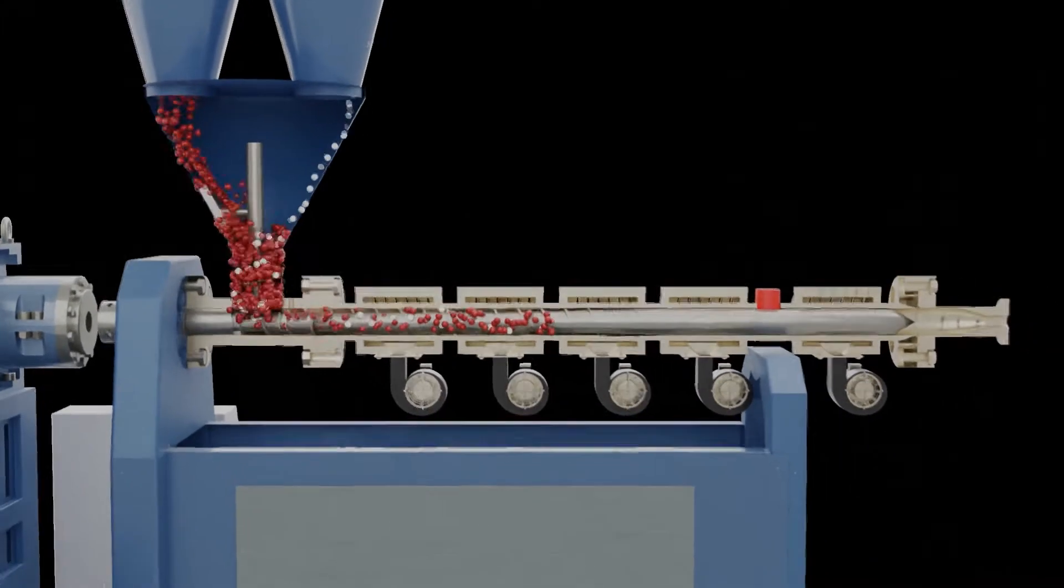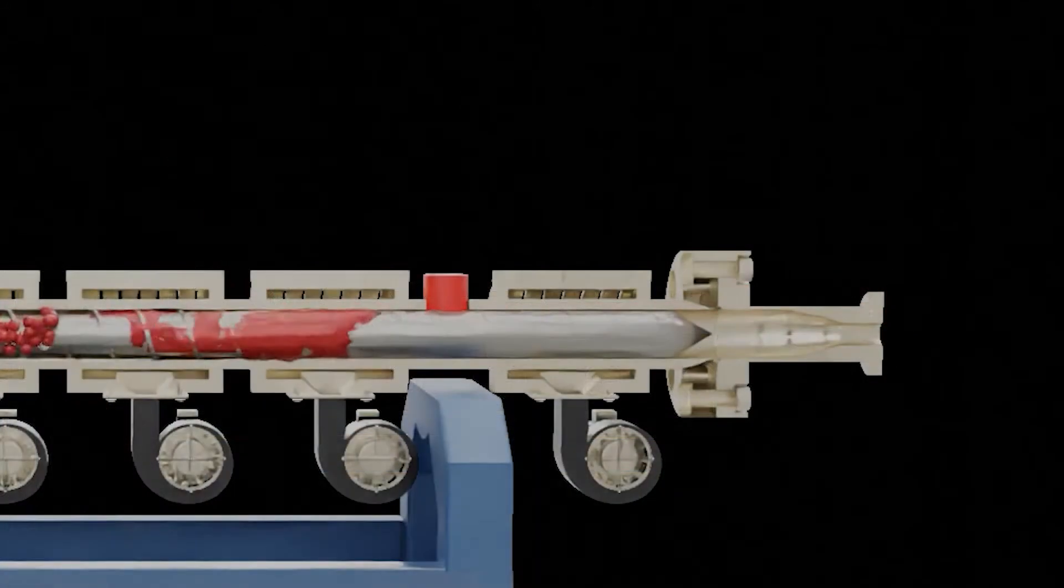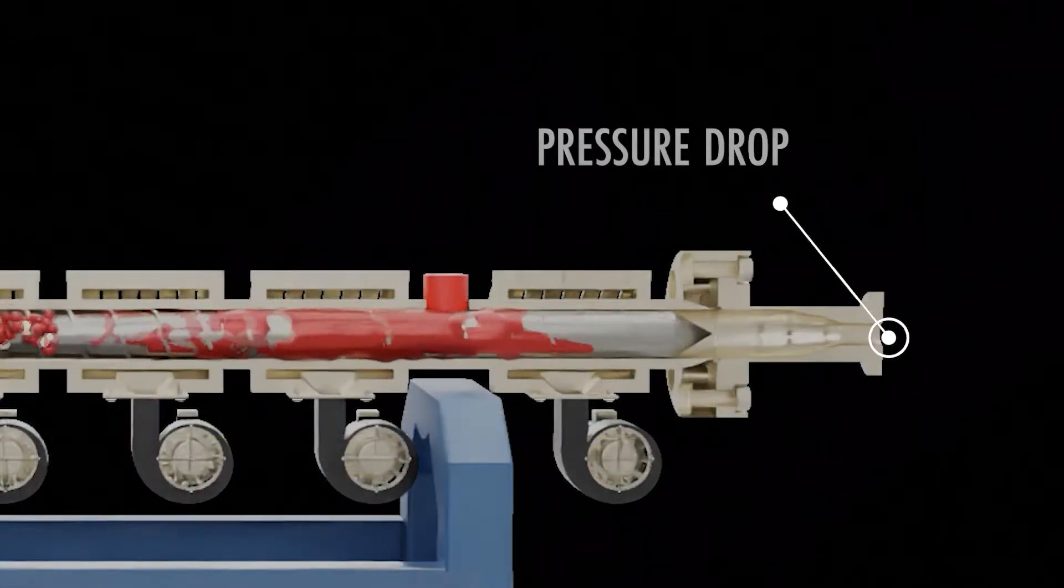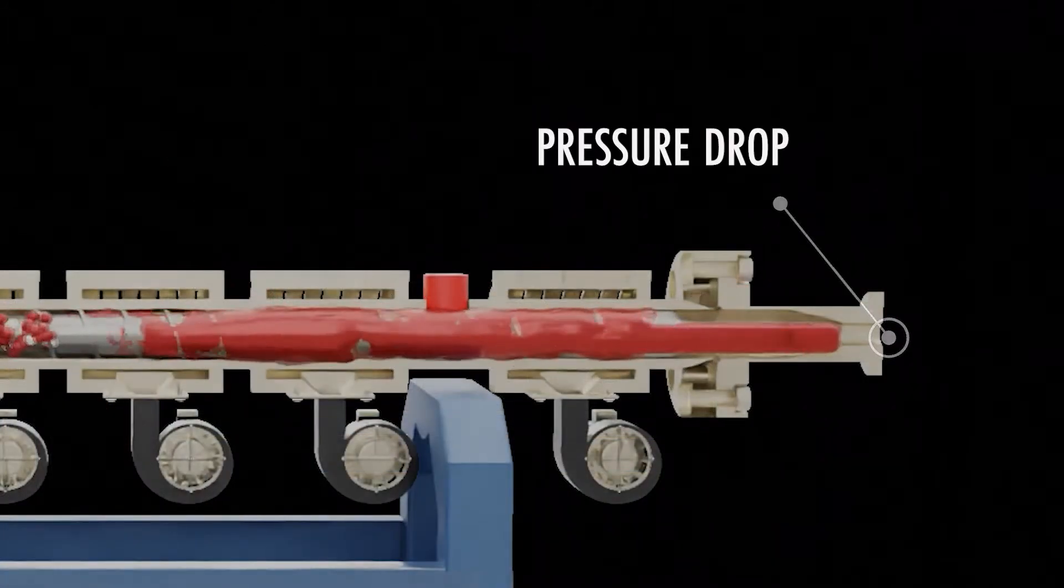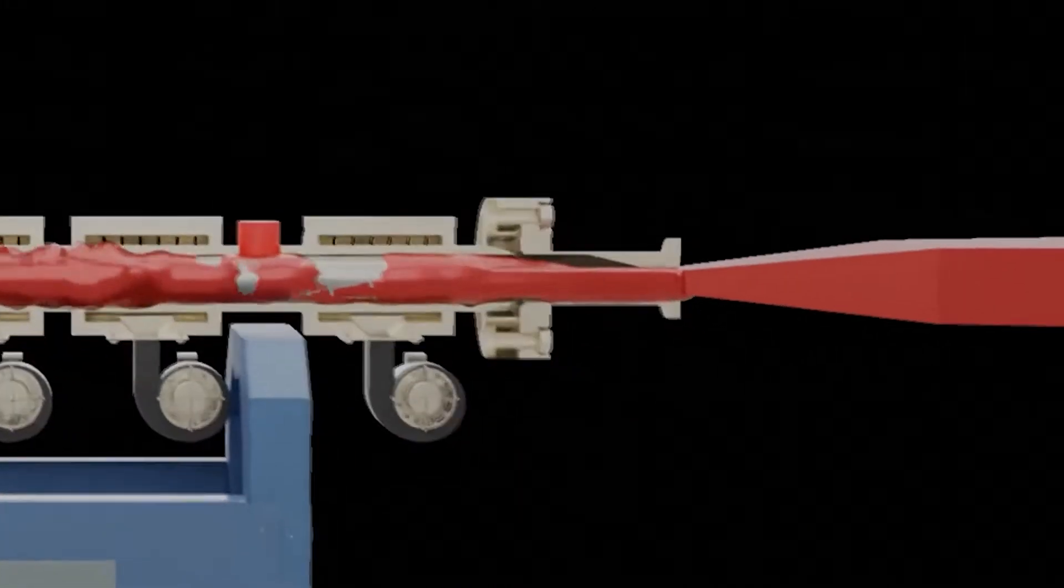This gas then dissolves in the melt due to the high pressure in the process. As the melt exits the die and undergoes a sudden pressure drop, the gas wants to come out of solution. As the gas expands out, so does the melt, thus creating a foamed part.